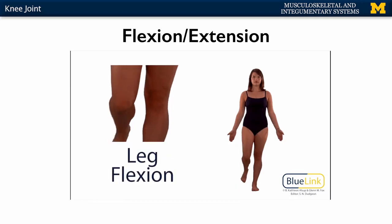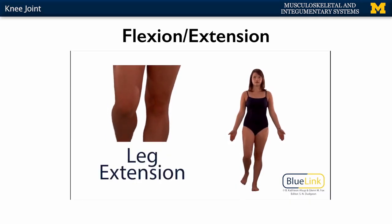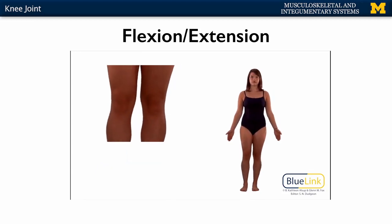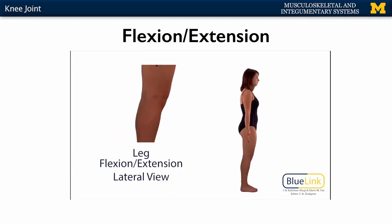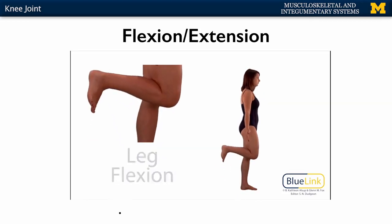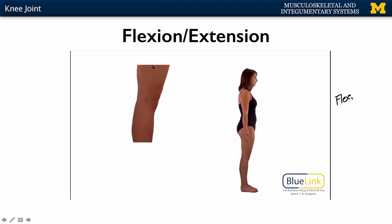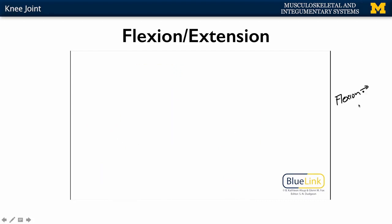You can see here in terms of the model, flexion is actually occurring in a posterior direction, where extension still returns to anatomical position. That's a key point: when we're talking about flexion in terms of the knee joint, that leg is moving posteriorly. So this is an important difference from other areas of the body.